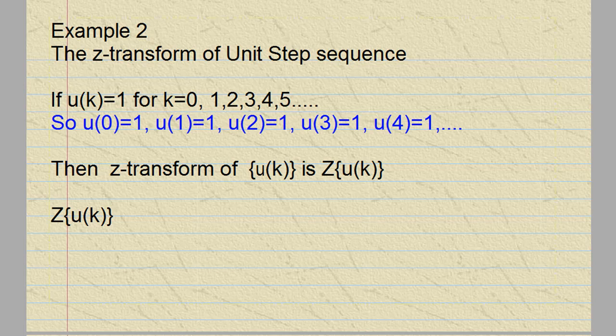So we know u(0) = 1, u(1) = 1, u(2) = 1, u(3) = 1, u(4) = 1, and so on. So the z-transform of u(k), where this u(k) is called a unit step sequence.